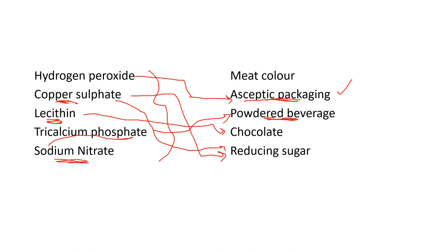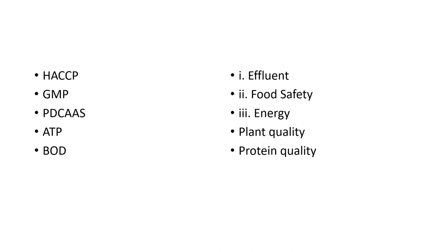Sodium nitrate is a salt used for preservation of meat. It helps maintain the color and quality of meat for a longer time. These chemical associations are very important — please note them all. A PDF of these slides will be provided for practice.